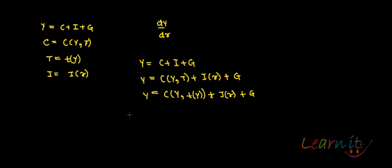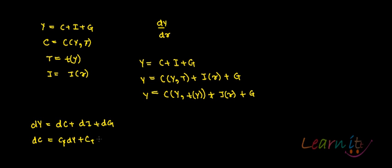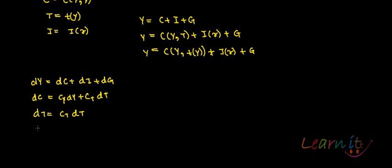To find dy, differentiate the first equation: dy = dC + dI + dG. From the consumption function, dC = C_y dy + C_t dt. From the tax function, dt = t_y dy. And dI = I_r dr, where I_r = ∂I/∂r.